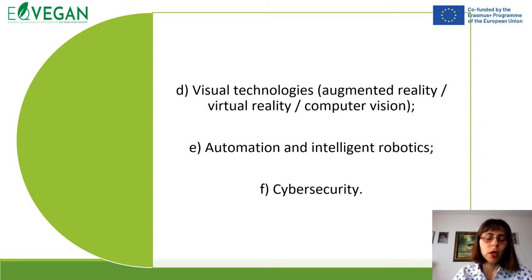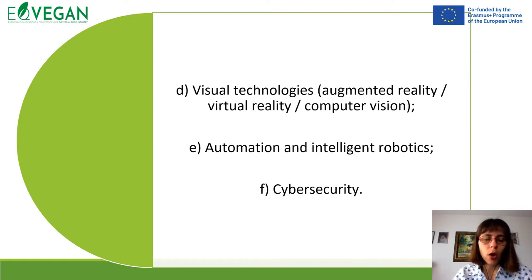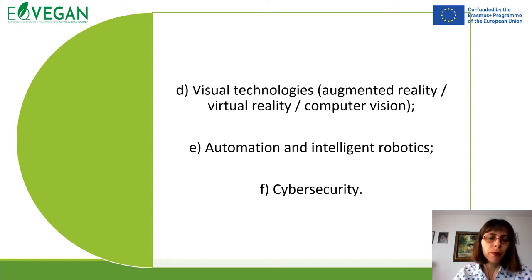An important aspect of Industry 4.0 is automation and intelligent robotics, which assist in the processing line. Also, cybersecurity is really important because with different ICT tools, sensors, and Internet of Things collecting data, we need to prevent anything that could compromise our production and maintain a high level of security in our processing plant.